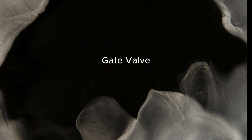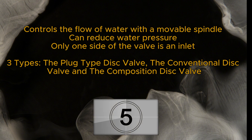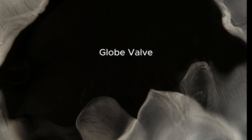The globe valve controls the flow of water with a movable spindle and reduces water pressure. Only one side of the valve is an inlet. Three types: plug type disc valve, conventional disc valve, and the composition disc valve.